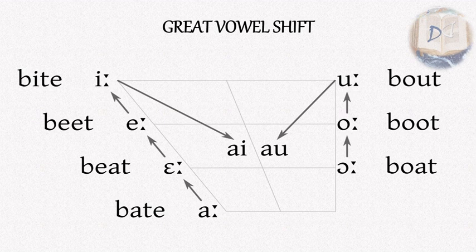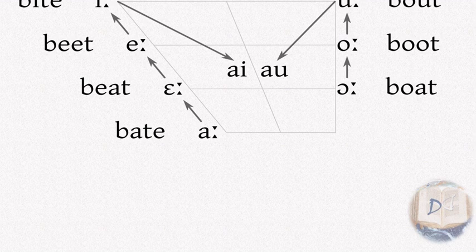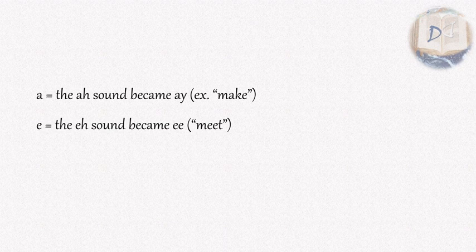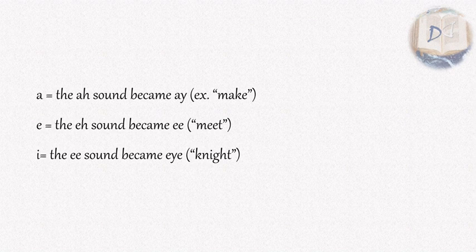For instance, the 'A' sound became 'AY', like 'mac' to 'make'. The 'E' sound became 'EE', like 'met' to 'meet'. The 'E' sound became 'I', like 'knit' to 'night'.